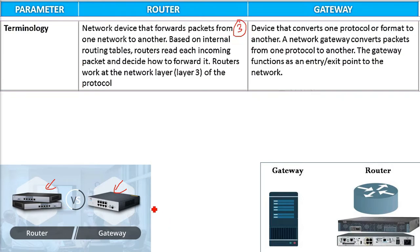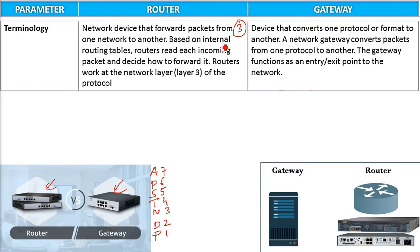It works on layer 3 of the ISO OSI model. Router is an intelligent device and works on the basis of IP address. It is for host-to-host delivery, so routers work at the network layer. Based on the internal routing table, routers read each incoming packet and then decide how to forward it.